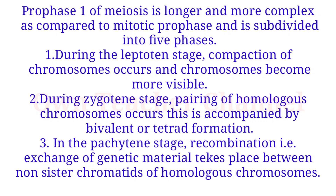During the leptotene stage, compaction of chromosomes occurs and chromosomes become more visible. During the zygotene stage, pairing of homologous chromosomes occurs. This is accompanied by bivalent or tetrad formation.